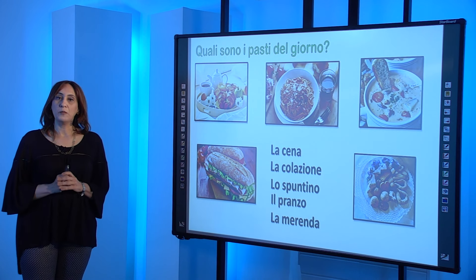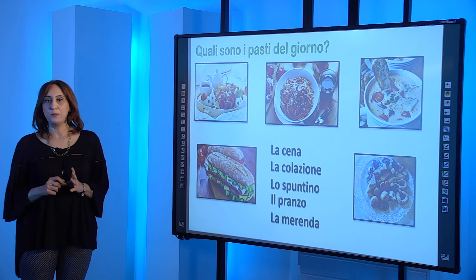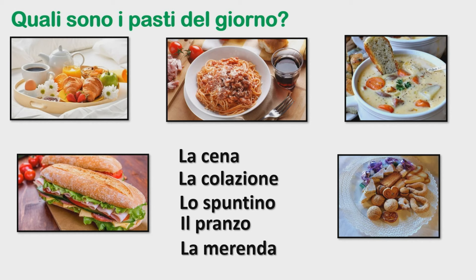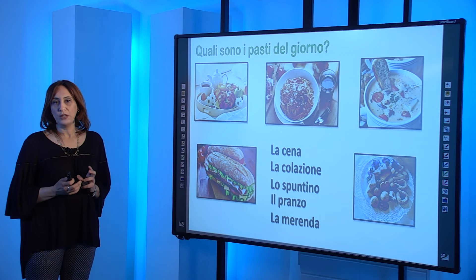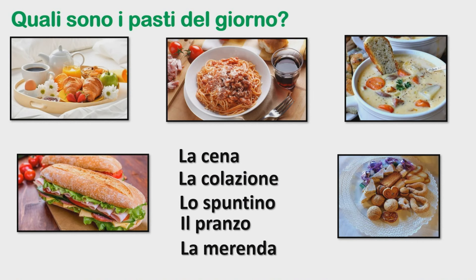Adesso vediamo in quale momento del giorno possiamo mangiare questi piatti. Quali sono i pasti del giorno? Mangiamo questi piatti durante i pasti. Qui avete cinque foto, sono cinque pasti. Ci sono, tra questi cinque pasti, due pasti principali e poi gli altri pasti sono piuttosto leggeri. Si comincia con il primo pasto appena alzati la mattina. Verso mezzogiorno o le tredici, il secondo pasto, e la sera, dopo le venti, c'è il terzo pasto principale. Nella lista avete: la cena, la colazione, lo spuntino, il pranzo e la merenda.